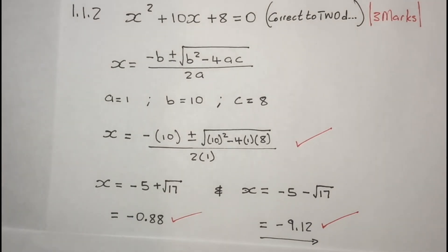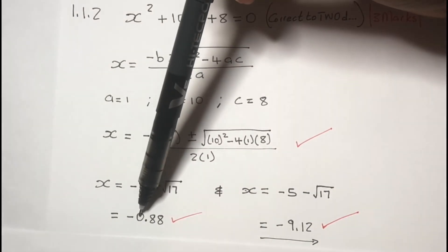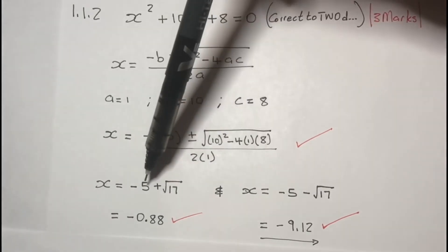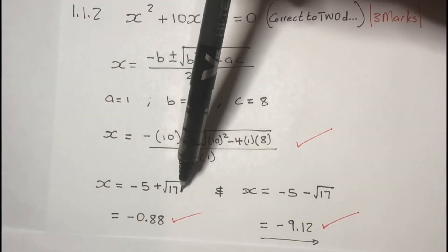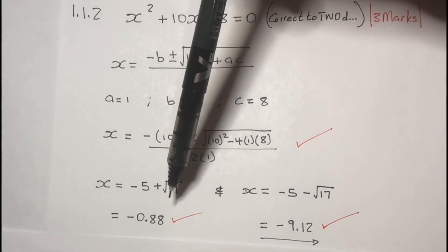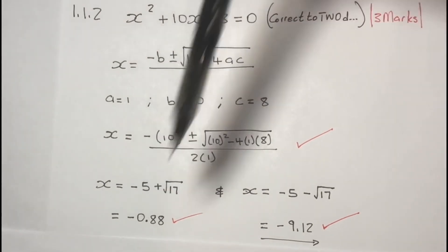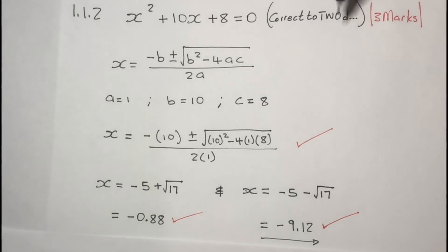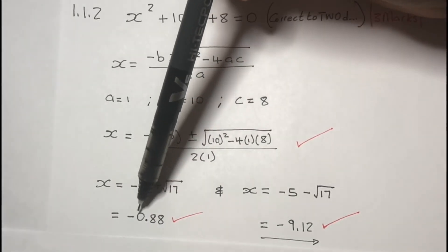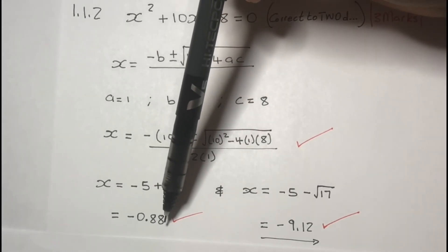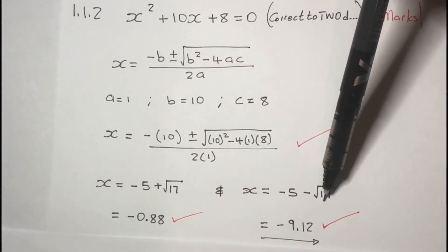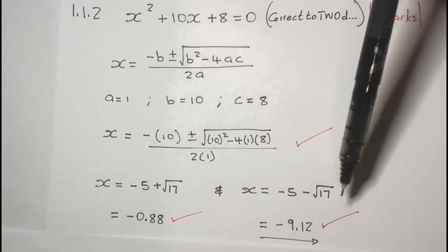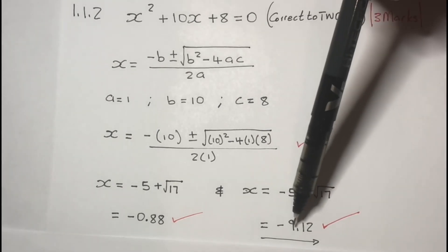And lastly, you've got negative 0.88 from this equation. So you just punch all of this on your calculator and convert it to a decimal. And remember to correct it to two decimal places, so it becomes negative 0.88. You do the same for this value, you convert it to a decimal place, and you get negative 9.12.